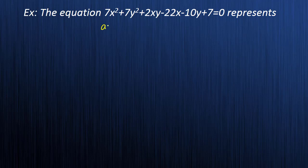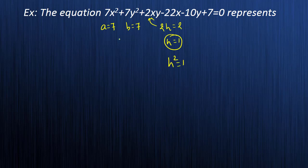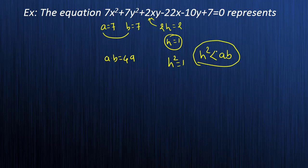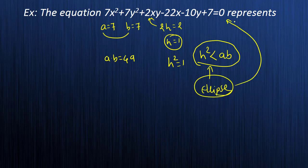Next example: a = 7, b = 7, and 2h = 2, so h = 1. Then h² = 1, and a × b = 7 × 7 = 49. The condition here is h² < ab, which means it is an ellipse. So the given second degree equation represents an ellipse.